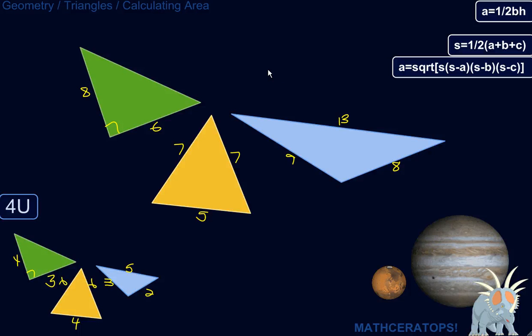Hey, so one way to calculate the area of a triangle, probably the way that you're most familiar with, is to call one side its base and then figure out what the height would be.